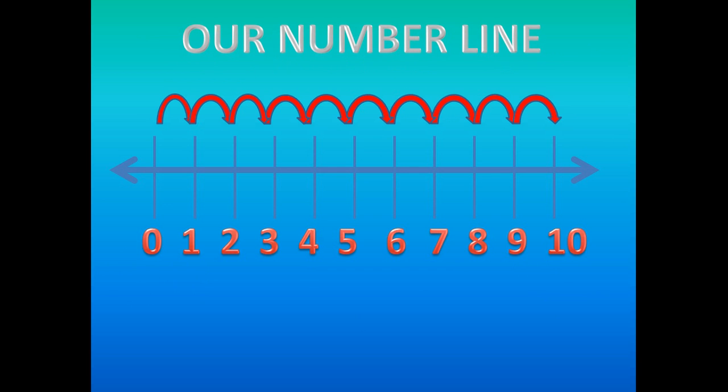Now let's look at our number line. One is greater than zero. Two is bigger than zero and one. Three is larger than zero, one, and two.